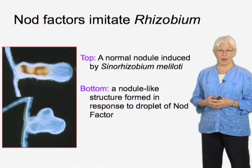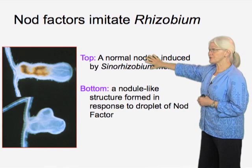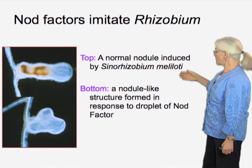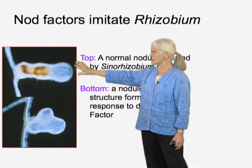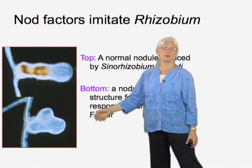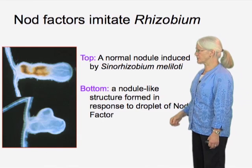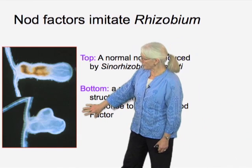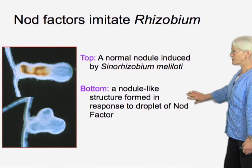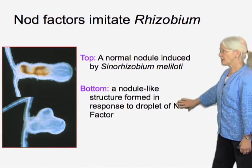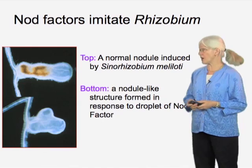Nod factors are very powerful. On the top, we have an alfalfa root where Sinorhizobium meliloti has established a nodule. At the bottom, we see a form that looks very similar and yet has no bacteria in it — this entire structure on an alfalfa root was caused just by a small droplet of nod factor. So this one chemical is able to produce an entire organ on the plant.